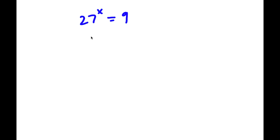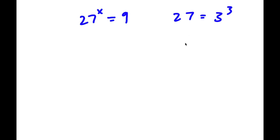Alright, so we have 27 to the power of x is equal to 9. What I'm first going to do is simplify 27 to the power of x. So 27 is the same thing as 3 to the power of 3. I'm going to substitute in 3 to the power of 3 for 27. So now I have 3 to the power of 3, to the power of x, is equal to 9.